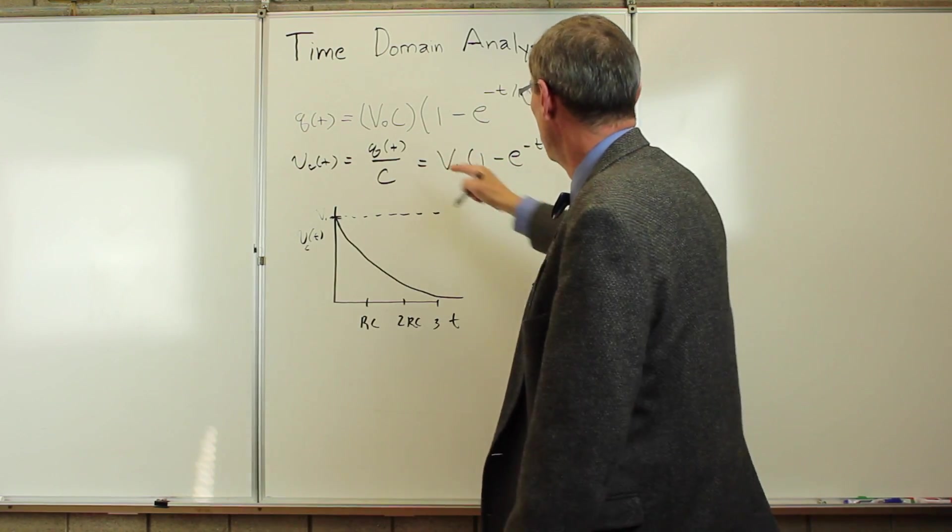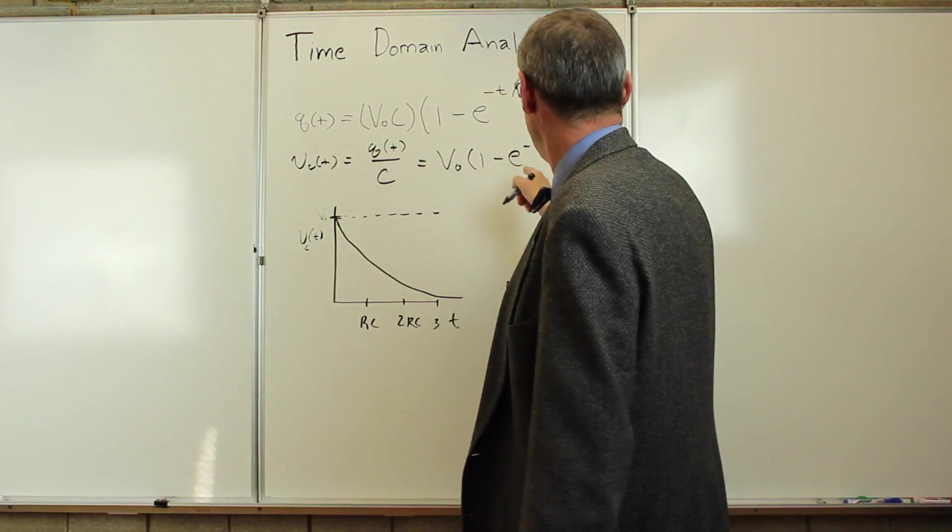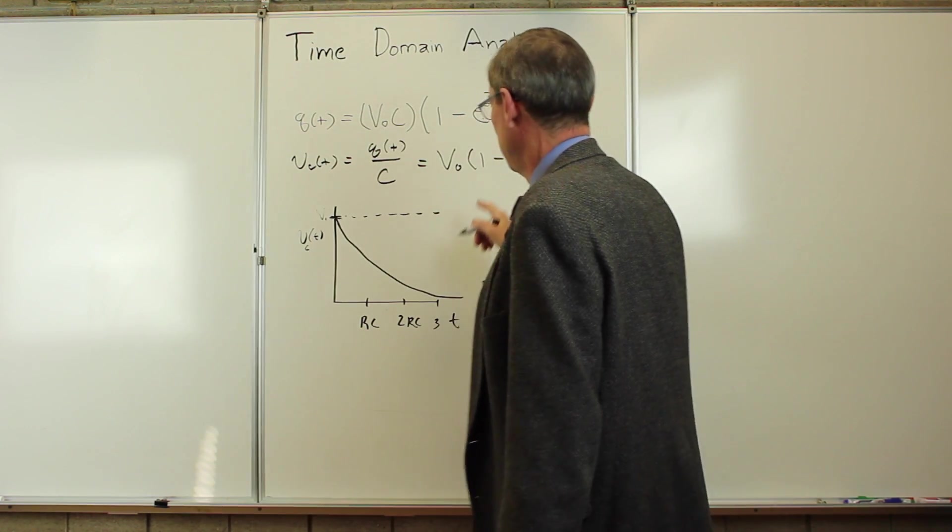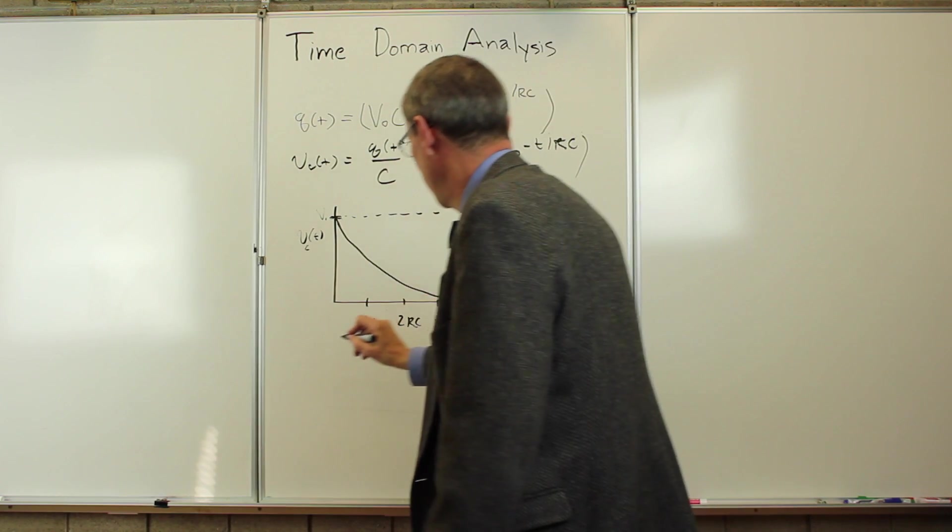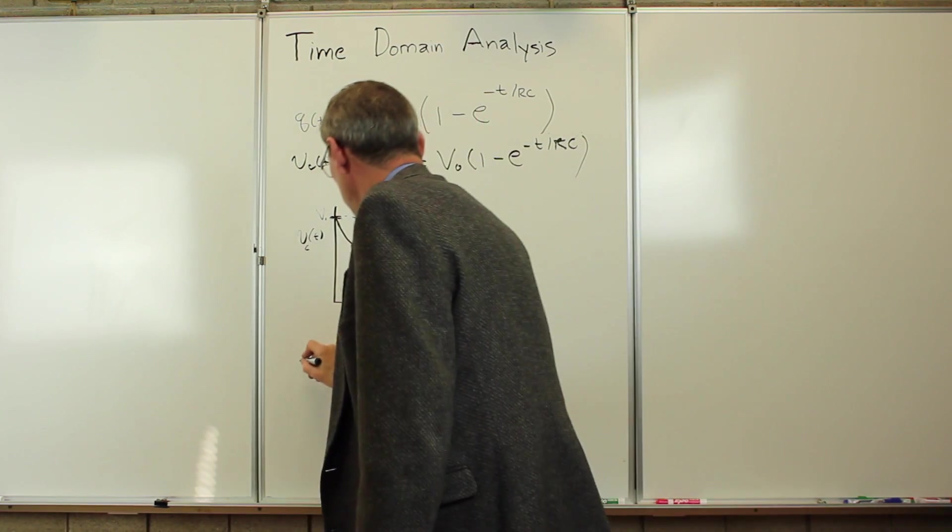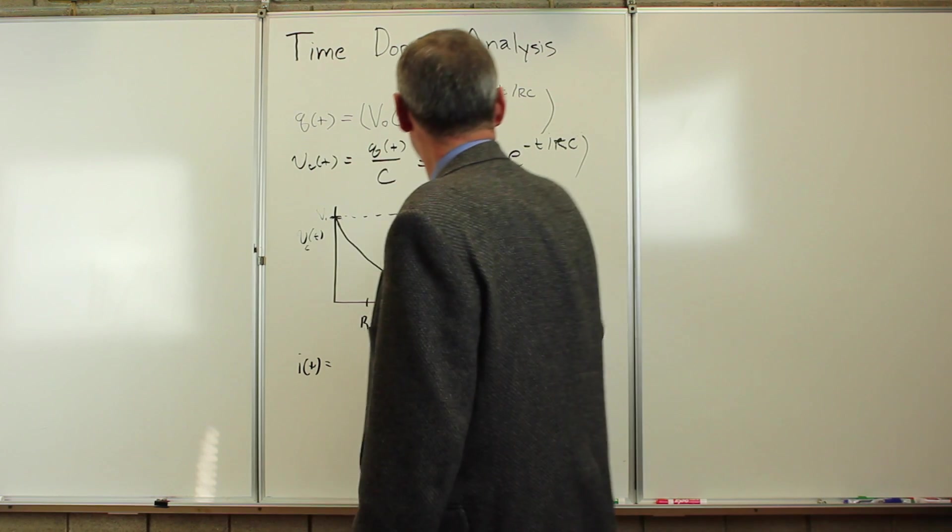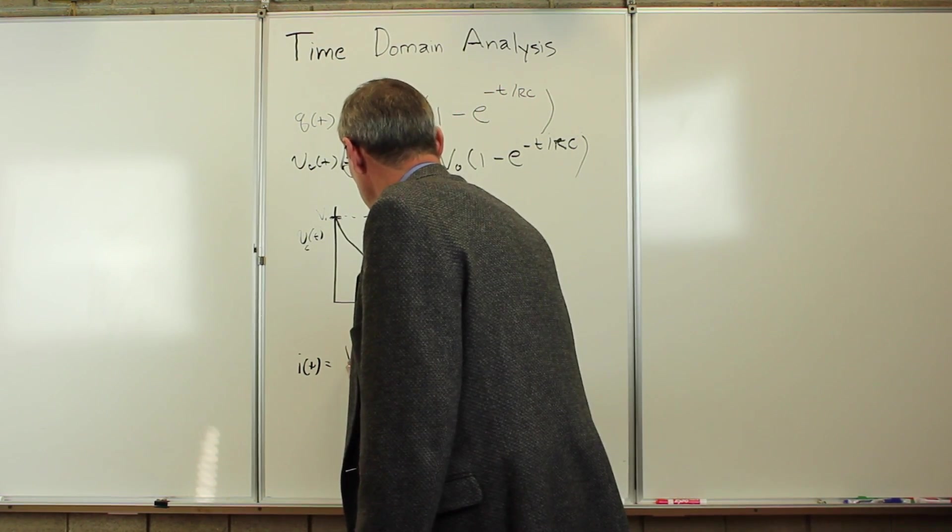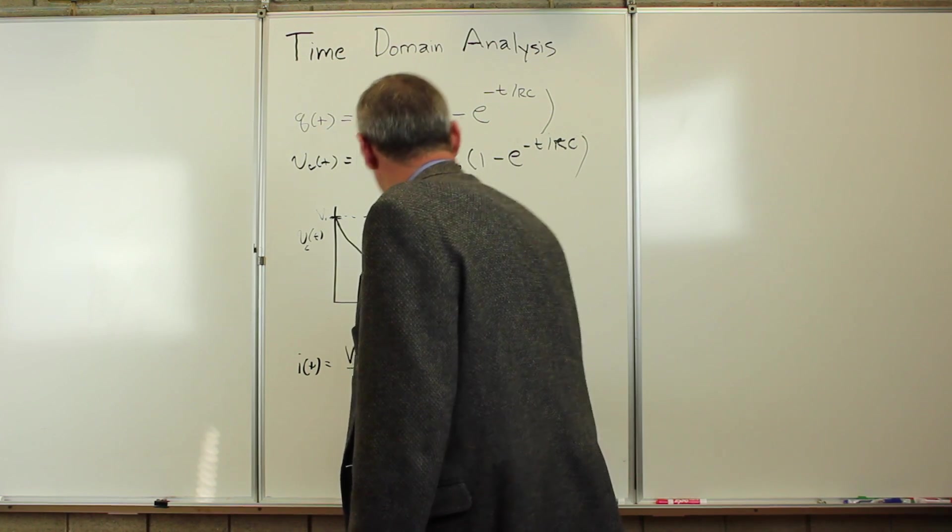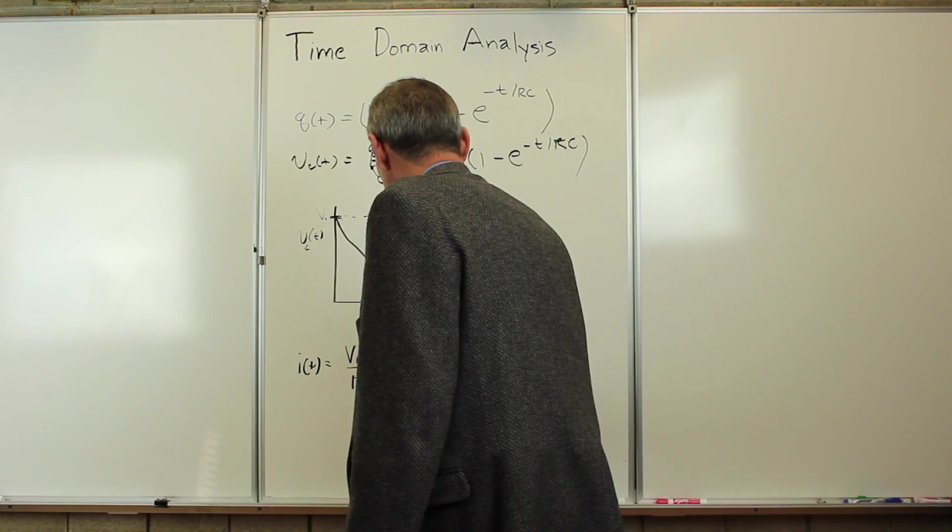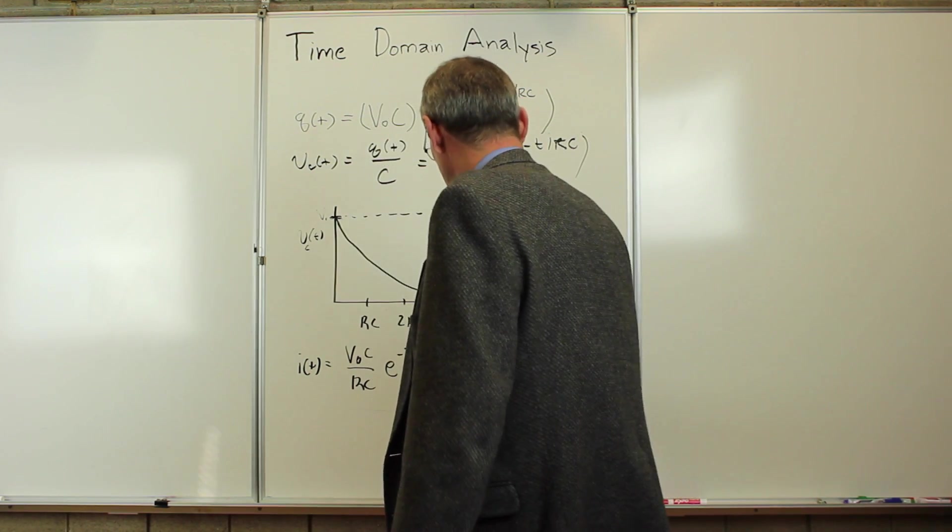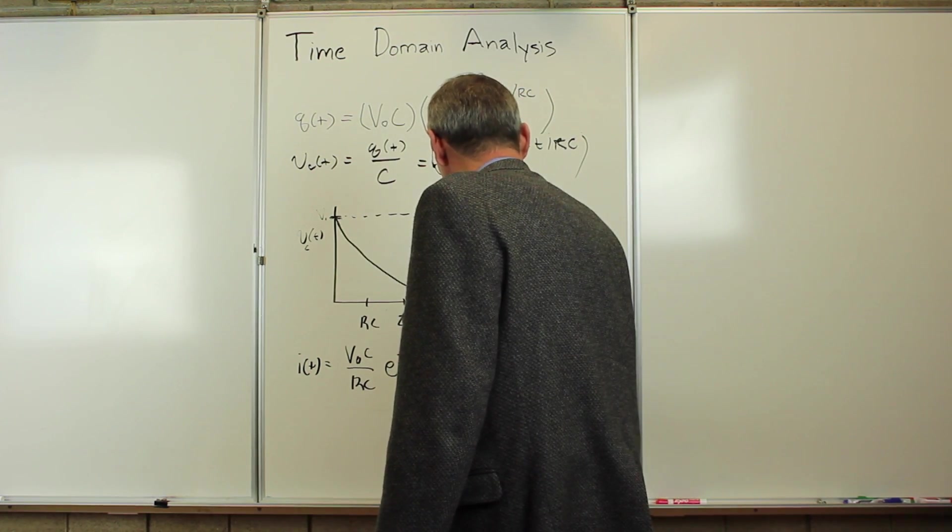The current is the time derivative of this, and if we do that, we're going to get the RC down. The current as a function of time is going to be V0 C over RC, bringing this down, e to the minus t over RC, which is going to be V0 over R, e to the minus t over tau RC.